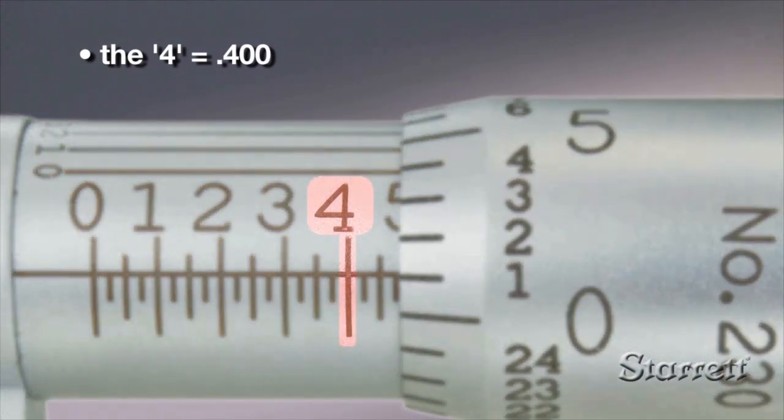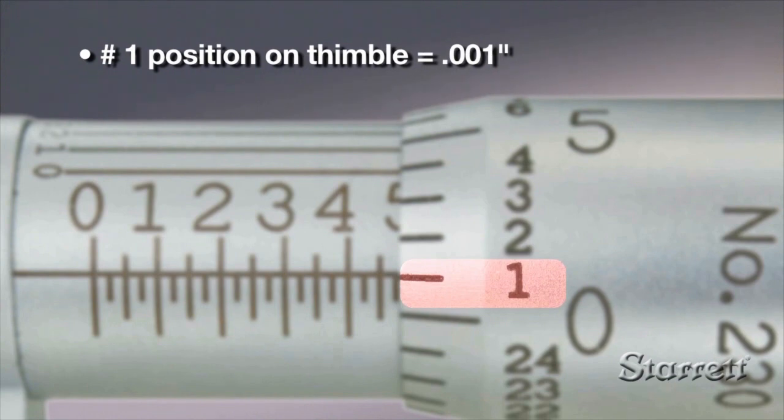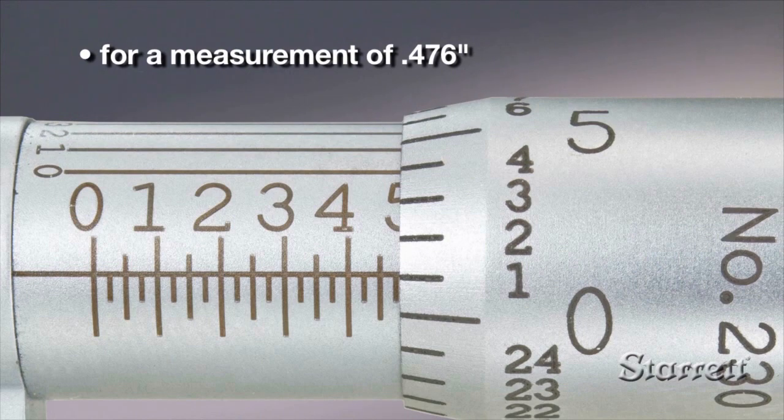In this example, the four is the last number visible representing four hundred thousandths. Three intermediate lines are visible representing three times twenty-five or seventy-five thousandths. The number on the thimble that aligns with the sleeve center line is one. So the value is four seven six thousandths.